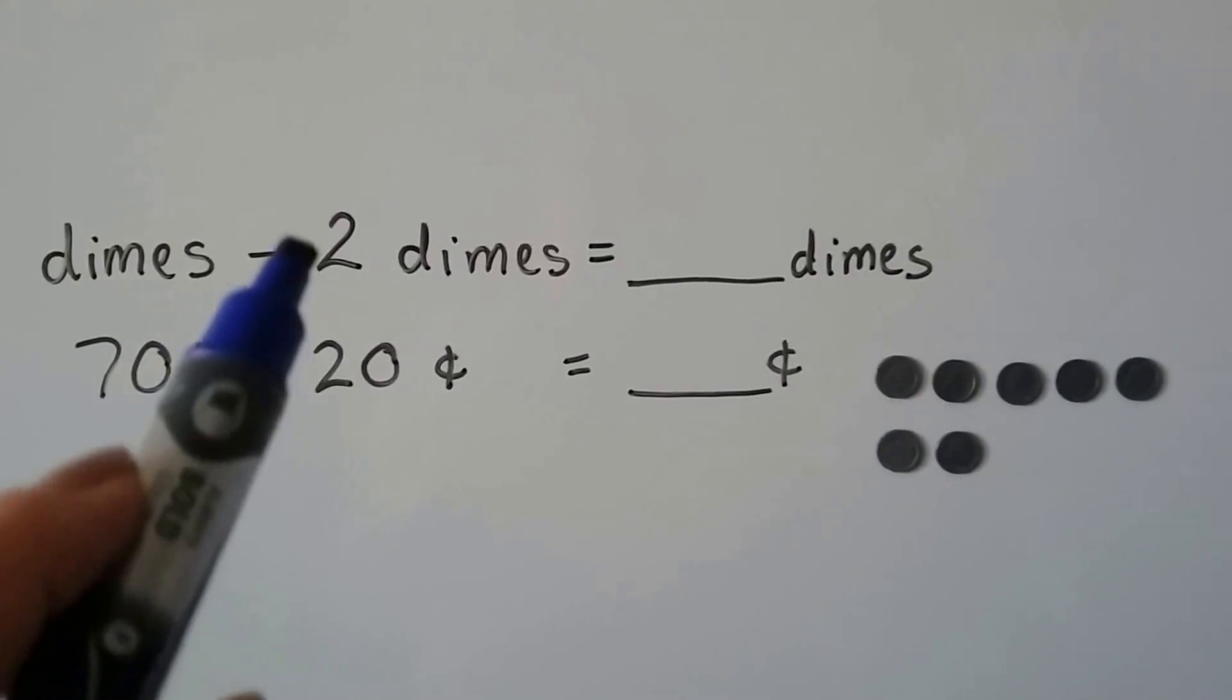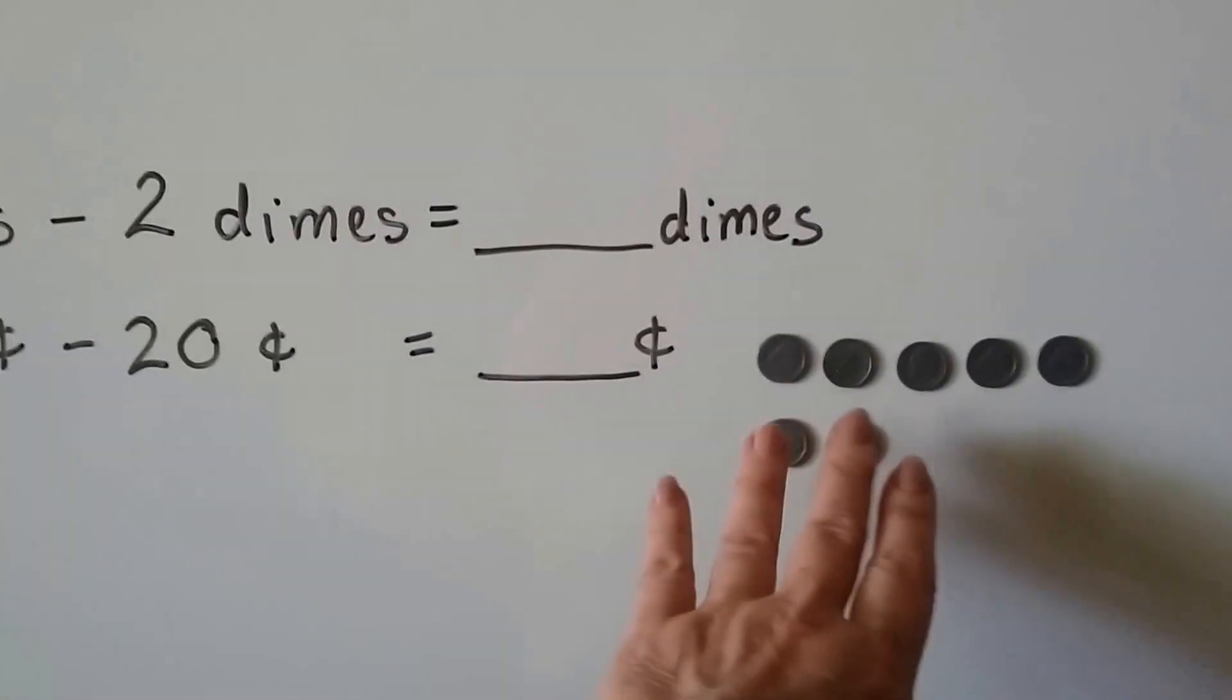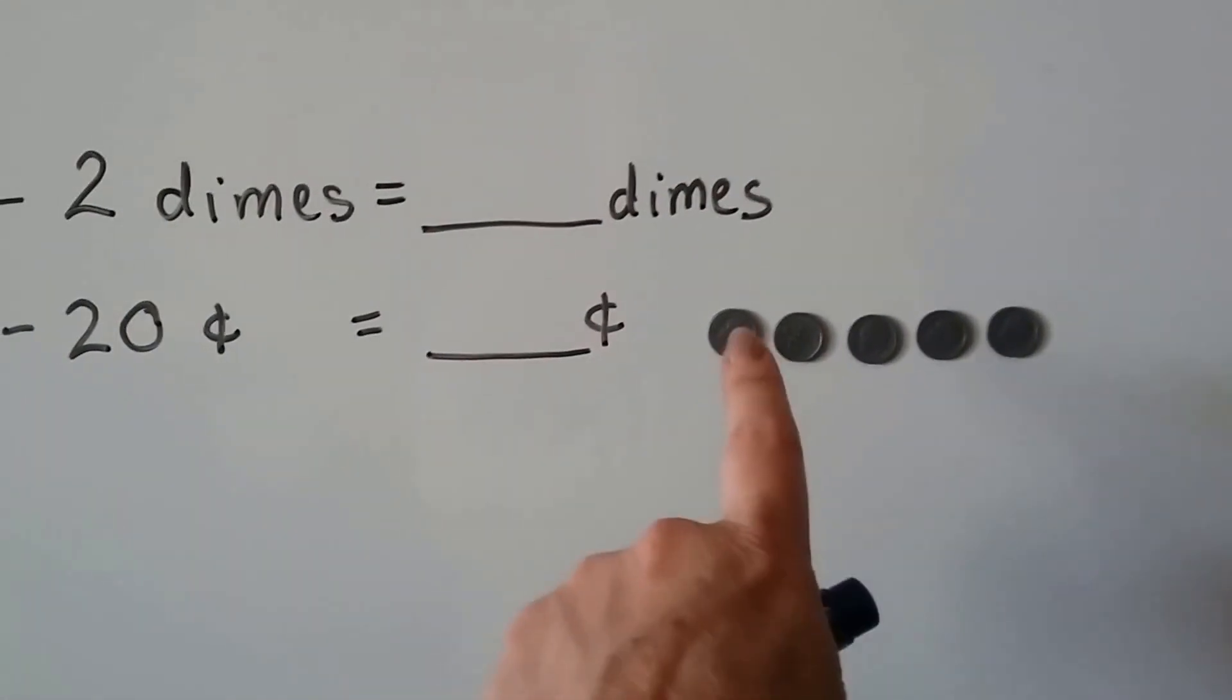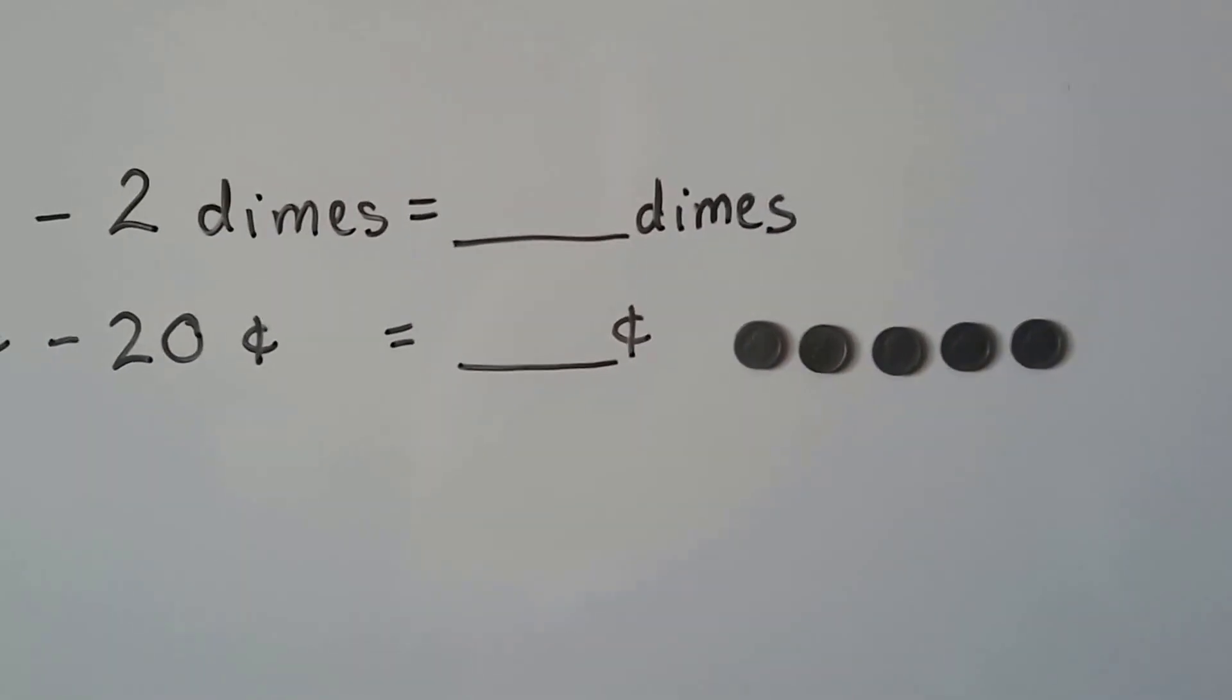If we have seven dimes and take two of them away, we could take these two away, couldn't we? We're just left with five dimes.